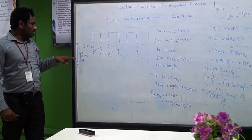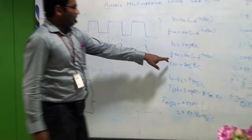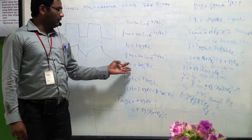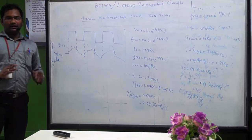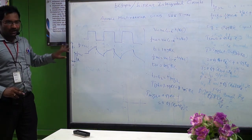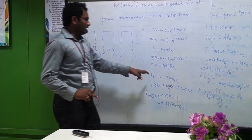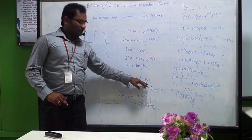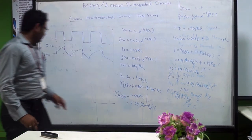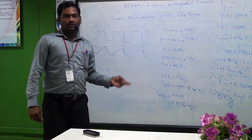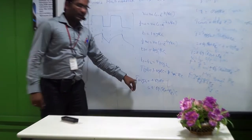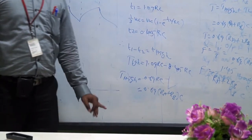Similarly, let T2 be the time taken for the capacitor to charge from 0 to 1/3 Vcc. So: 1/3 Vcc = Vcc × (1 − e^(−T2/RC)), which gives T2 = 0.405 RC. The capacitor charges from 1/3 Vcc to 2/3 Vcc during the high period, so the high time T_high = T1 − T2 = 1.09 RC − 0.405 RC = 0.69 RC. Since the capacitor charges through RA and RB, R = RA + RB, giving T_high = 0.69 × (RA + RB) × C.